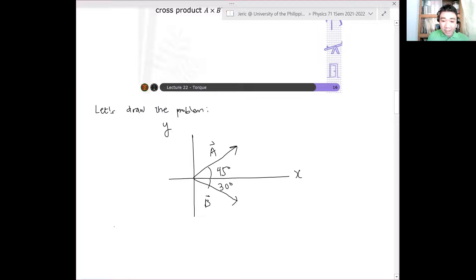A cross B is simply the magnitude of A times the magnitude of B times sine of the angle between them. Now, what is the angle between A and B? What is phi? Remember, A is 45 degrees with respect to positive X, B is minus 30 degrees with respect to positive X. Therefore, what is the angle phi? You just need to add them, right? So phi is just equal to 75 degrees.